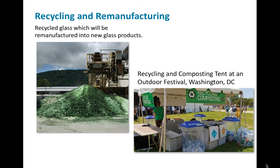A look at recycling and remanufacturing shows recycled glass being remanufactured into new glass products. At festivals, there are places where you can recycle and put compost — like music festivals — where you have a place to put cans, bottles, paper, and plastics. And that's it, ladies and gentlemen. Hopefully you enjoyed that and got everything you needed for Chapter 11, Key Issues 2 and 3. We will see you again soon.